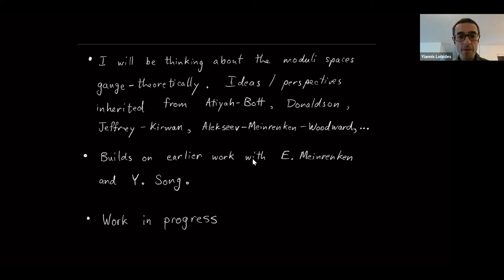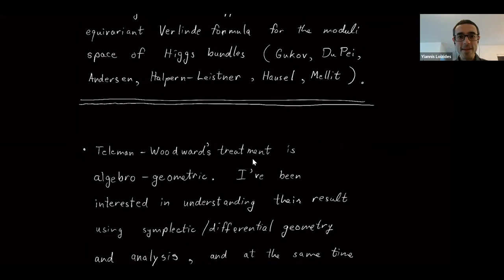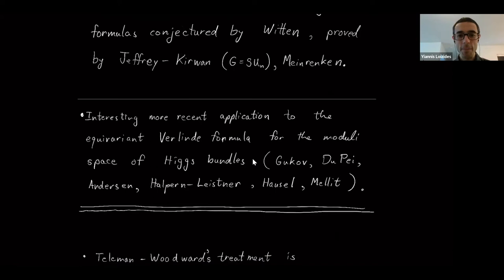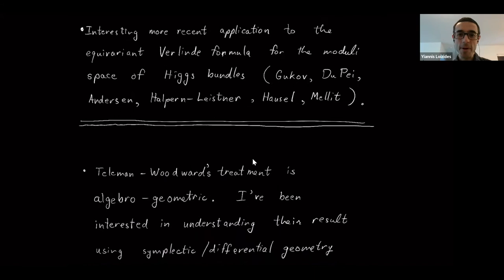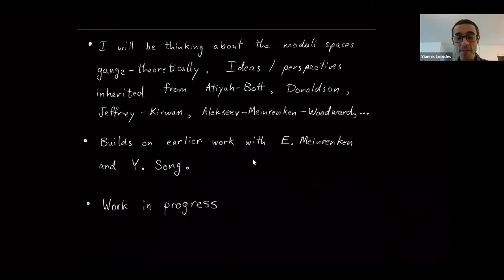This work builds on earlier work with Eckert Meinrenken and Yanli Song. I want to mention intellectual debt to the work of Pardon and Vern — I'm using some of their ideas in key places. Also, Michele Vern was the first person who pointed out the work on the equivariant Verlinde formula to me when I was still a young graduate student, and it was completely over my head at the time, but it definitely stuck in my mind. I have a big debt to Eckert Meinrenken — he was my PhD advisor and a lot of what I understand about Hamiltonian loop group spaces comes from him.